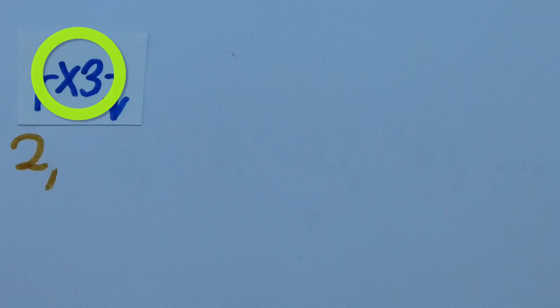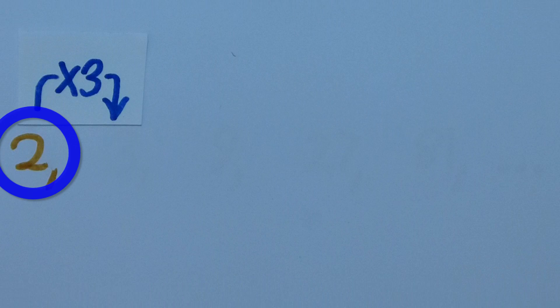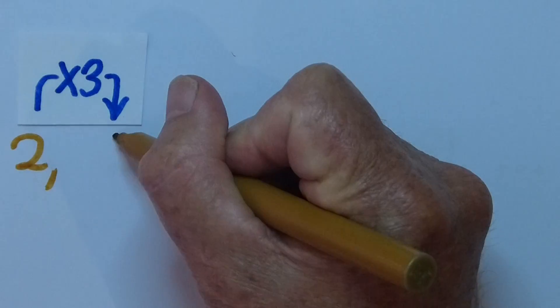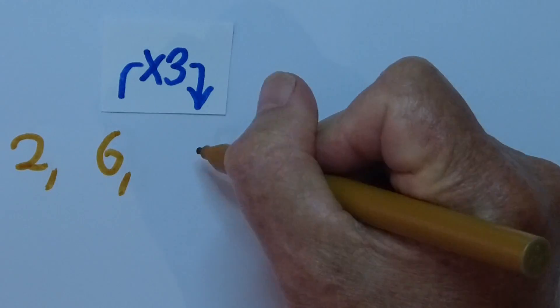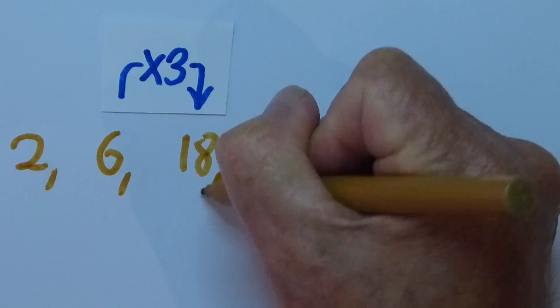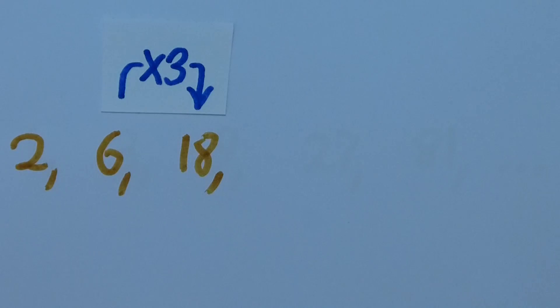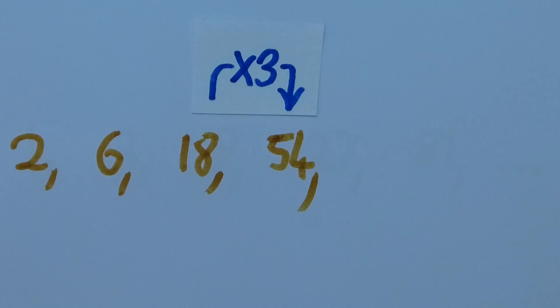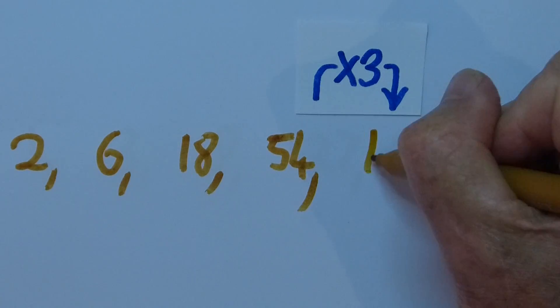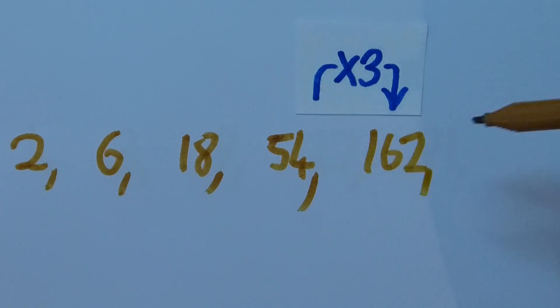Here the common ratio is also 3, but it starts at 2. By 3 is 6, by 3 is 18, by 3 is 54, by 3 is 162, and so on.